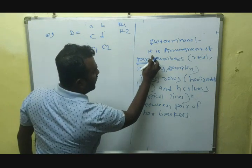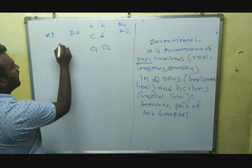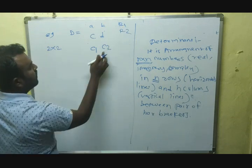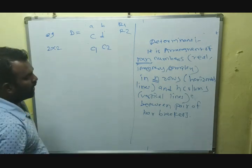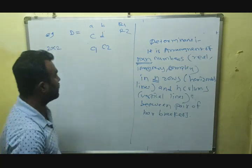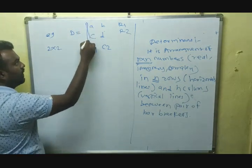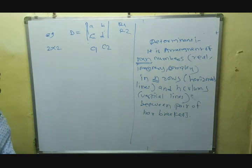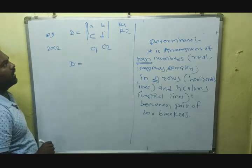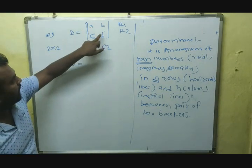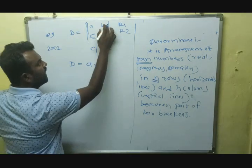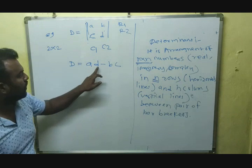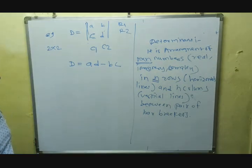According to the definition, this is an arrangement of 2 by 2 numbers — 2 rows R1 and R2, and 2 columns — between pair of bar brackets, which are just straight lines. So this is a determinant of order 2 by 2. You know that the determinant of a 2 by 2 is simply calculated as A into D minus B into C.